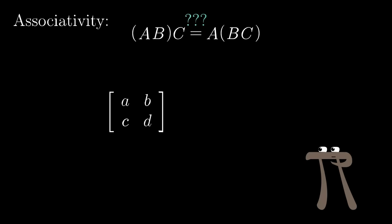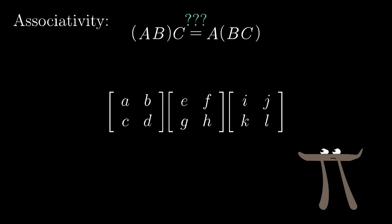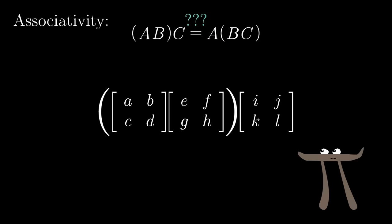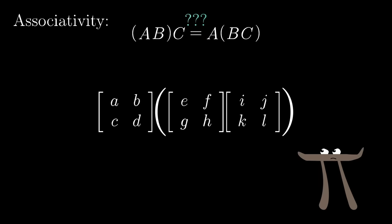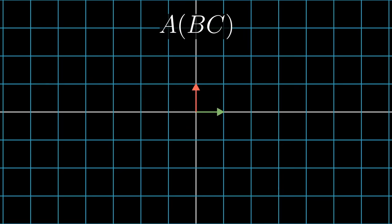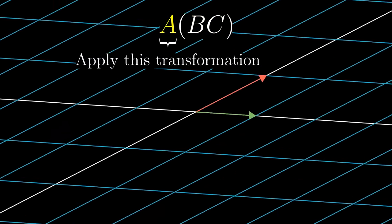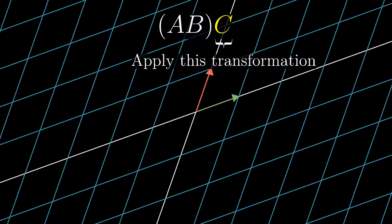Now if you try to work through this numerically, like I did back then, it's horrible, just horrible, and unenlightening for that matter. But when you think about matrix multiplication as applying one transformation after another, this property is just trivial. Can you see why? What it's saying is that if you first apply C, then B, then A, it's the same as applying C, then B, then A.